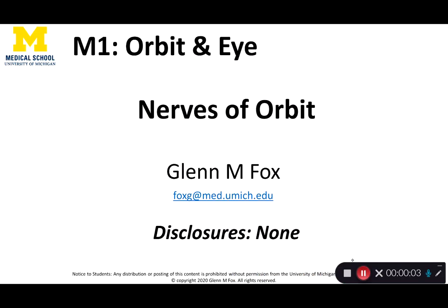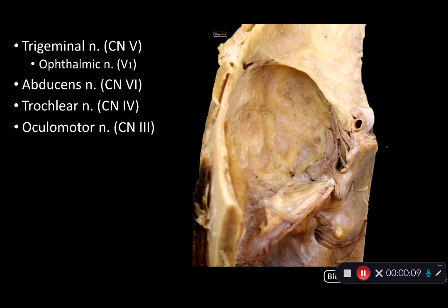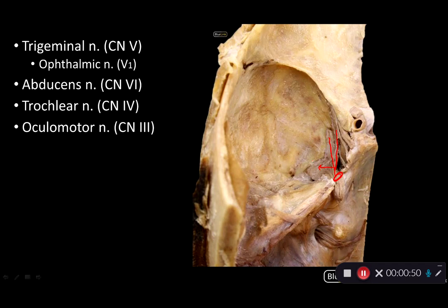Hi, let's talk about the nerves of the orbit. What you're looking at here is the left side of the middle cranial fossa. Along this ridge is the petrous portion of the temporal bone. We can see the trigeminal nerve moving under the dura, which has been stripped away. You can see the ophthalmic nerve or V1, the maxillary nerve or V2, and the mandibular nerve or V3.